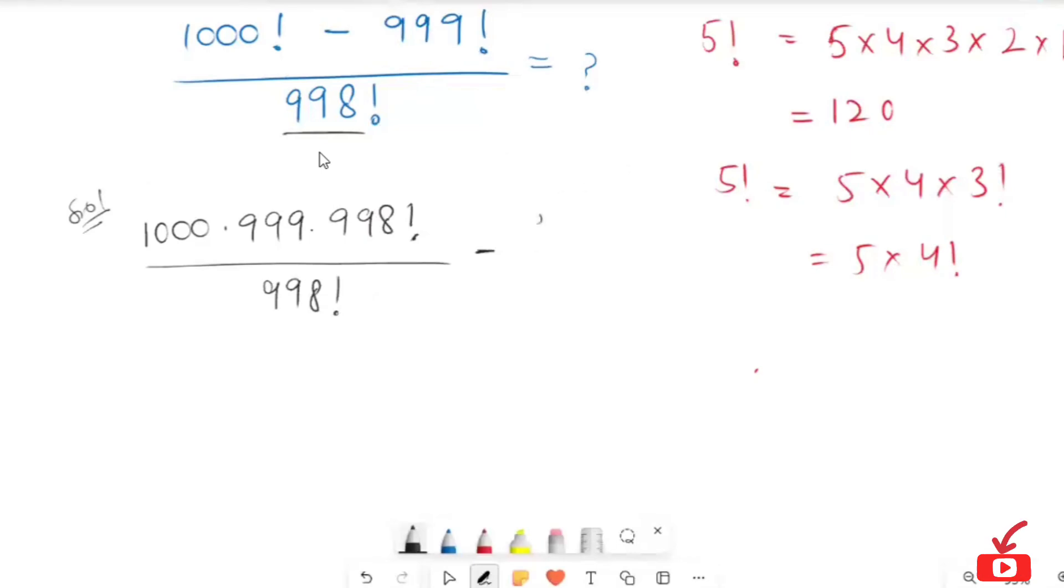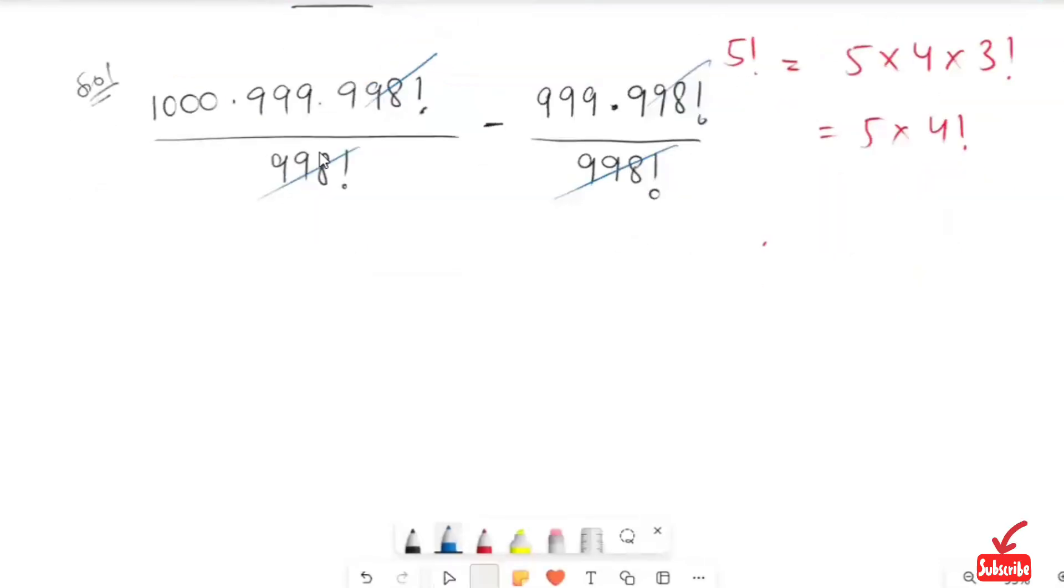In the placement of this, I am going to have 999 times 998 factorial. Again, here I am going to end up with the same denominator, 998 factorial. Here this and this get cancelled. This and this get cancelled. So the remaining expression we have: